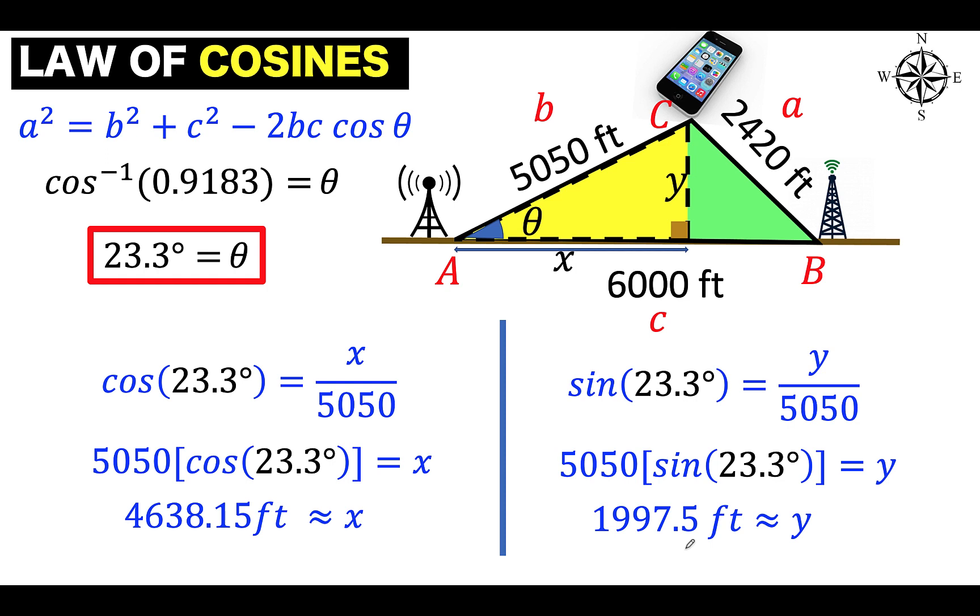And so these are now the three values that you would like to find in this problem. We already found what is the measure of the angle, and we need this measurement of the angle so that we can determine the position of the cell phone east and north of Tower A. So with respect to this tower, this cell phone is 4,638.15 feet. And with respect to this tower also, the cell phone is 1,997.5 feet away from the highway. And these are now our final answers.